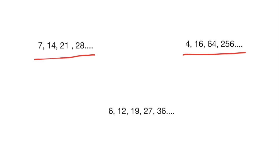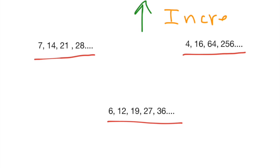The first type of pattern we're going to look at is a growing pattern, and in this particular case it is an increasing pattern. As you can see, all three of these patterns here — this one, this one, and this one — the numbers in those patterns are going up. Because of that, we usually refer to these types of patterns as increasing growing patterns.